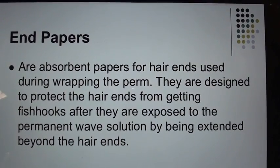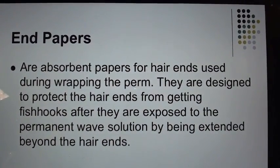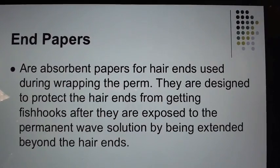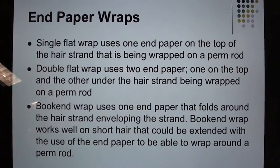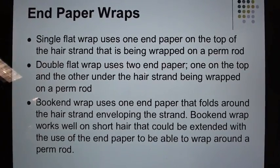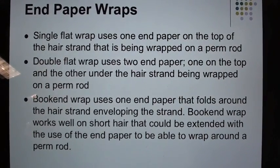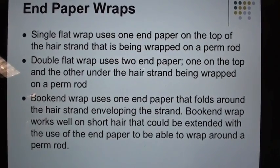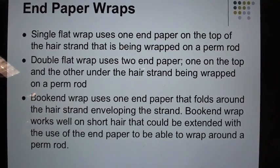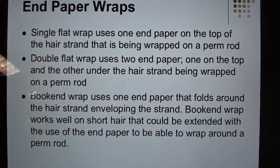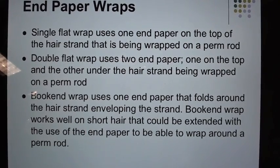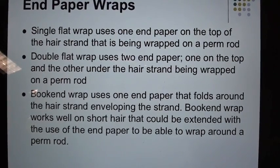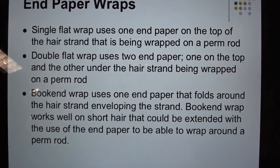End papers are absorbent papers for hair ends used during perm wrapping, designed to protect hair ends from getting fish hooks after exposure to the permanent wave solution by being extended beyond the hair ends. End paper wraps: Single flat wrap uses one end paper on top of the hair strand. Double flat wrap uses two end papers — one on top and one under the strand. Book end wrap uses one end paper folded around the hair strand overlapping it, and works well on short hair to extend it enough to wrap around the perm rod.